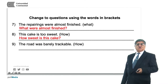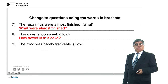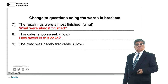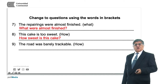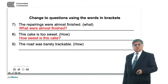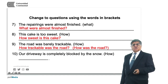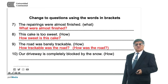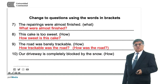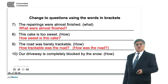In number nine, we have how. Let's analyze the sentence. The road was barely trackable — trackable is the adjective and barely is the adverb of degree. So how trackable was the road is a correct answer. But also we can say how was the road. If we want to keep coherence about the first sentence, we should use the first option: how trackable was the road.